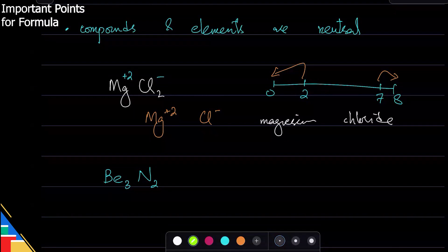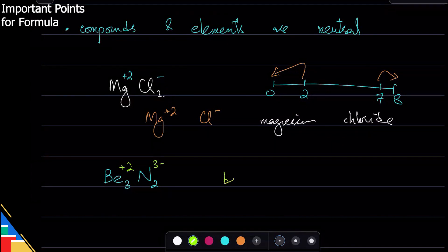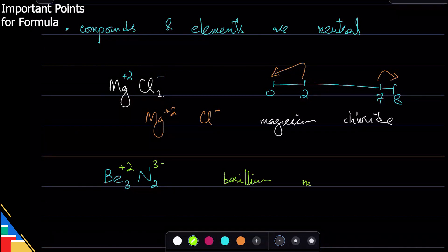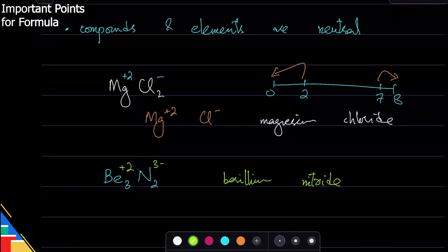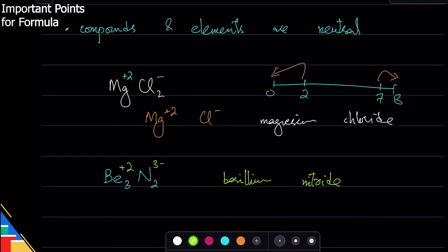The answer is beryllium nitride. Beryllium is group two, so it's plus two, and nitrogen is group five, so it needs three electrons — minus three. One note on spelling: in O-levels or IGCSE, you don't lose marks for a spelling mistake unless it means something else chemically. For example, writing 'nitride' instead of 'nitrogen' is a chemistry mistake, but spelling 'nitride' with two r's is fine.